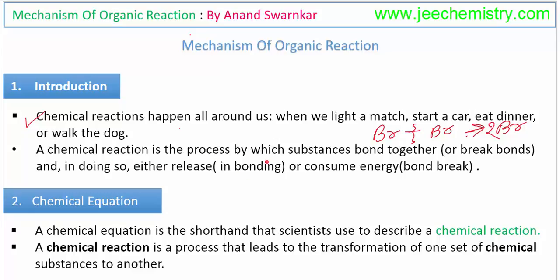In a chemical reaction, substances bond together or break bonds, either releasing or consuming energy. Energy is required to break bonds, while energy is released when bonds are formed, because forming bonds stabilizes the molecule. So stabilization leads to a release of energy.